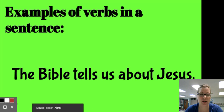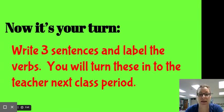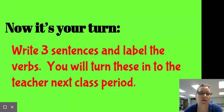All right, now it is your turn. I would like you to write three sentences and label the verbs in them with a V. You will turn these in to me tomorrow during class. Make sure that you label the verbs. But if you want, you can also label the subject since you have to find the subject in order to find the verb. Your first step every sentence is to find the subject. And then you look for the action or the state of being.